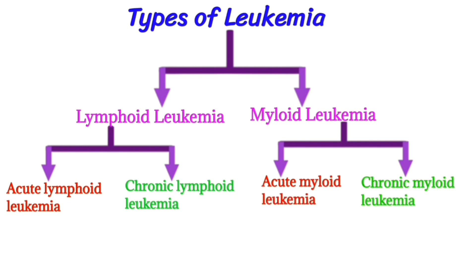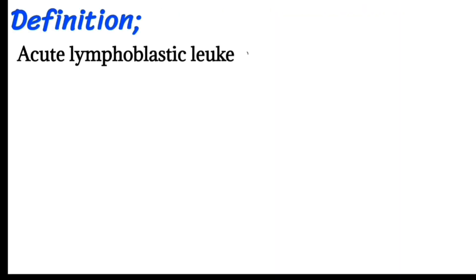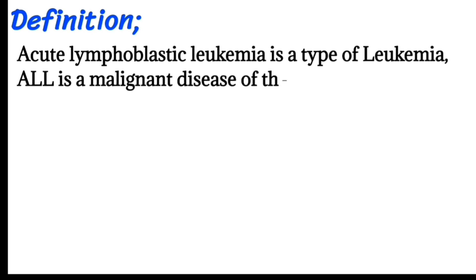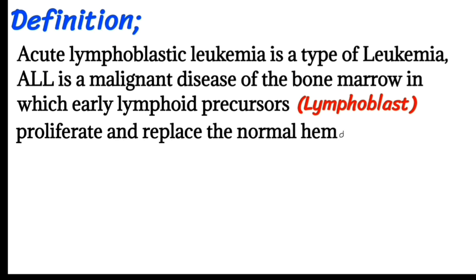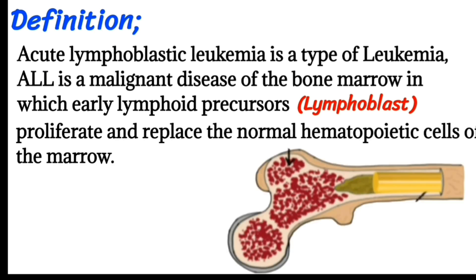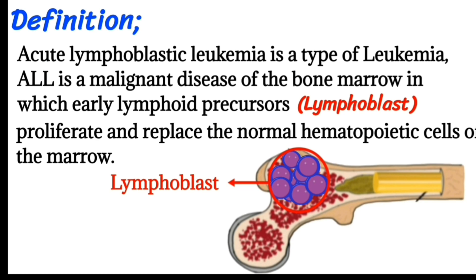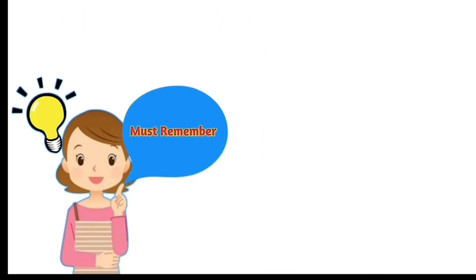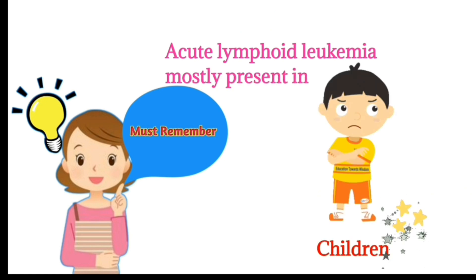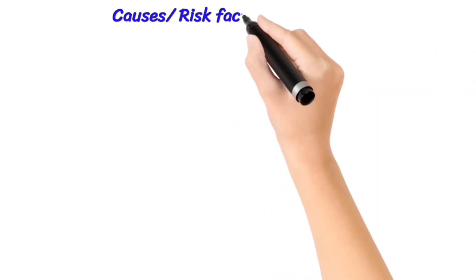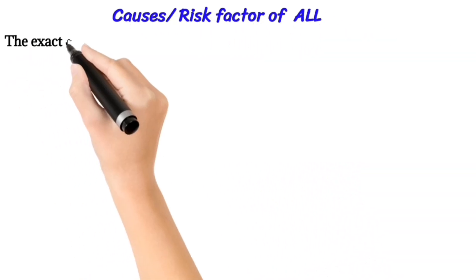Today we will talk about acute lymphoid leukemia. Definition: acute lymphoid leukemia (ALL) is a malignant disease of the bone marrow in which early lymphoid precursors — that is, lymphoblasts — proliferate and replace the normal hemopoietic cells of the marrow. As seen in the picture, lymphoblasts are shown. ALL mostly presents in children.